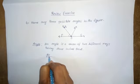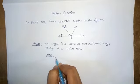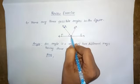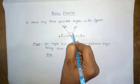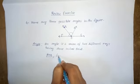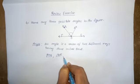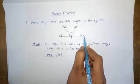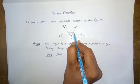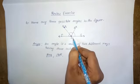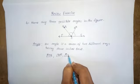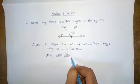Angle POQ is one angle. Next, OQ is one ray and OR is another ray — these two rays form angle QOR. From O to S is one ray and O to R is another ray — these two rays join to form angle ROS.